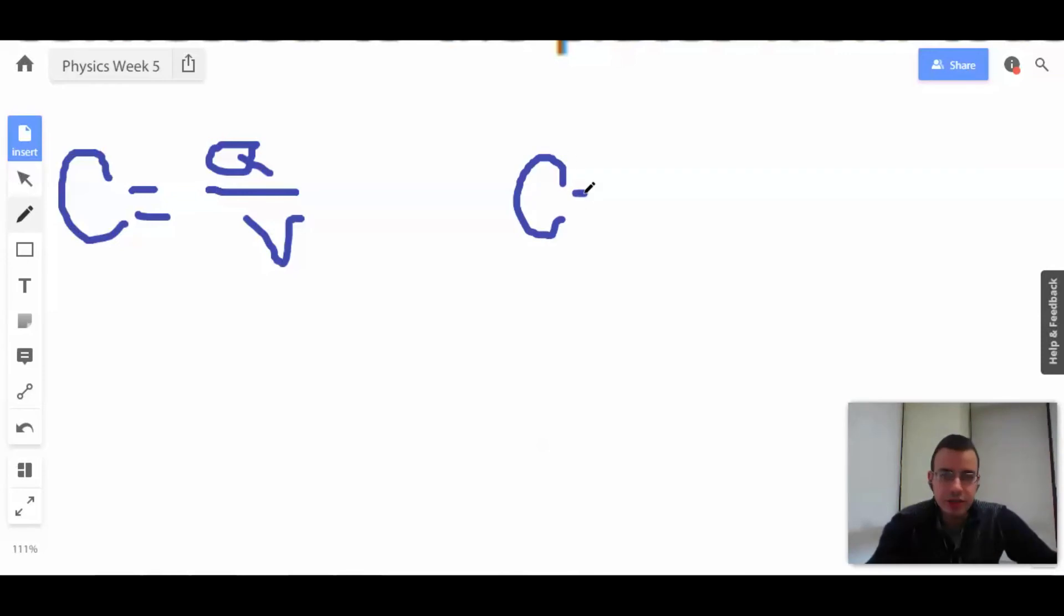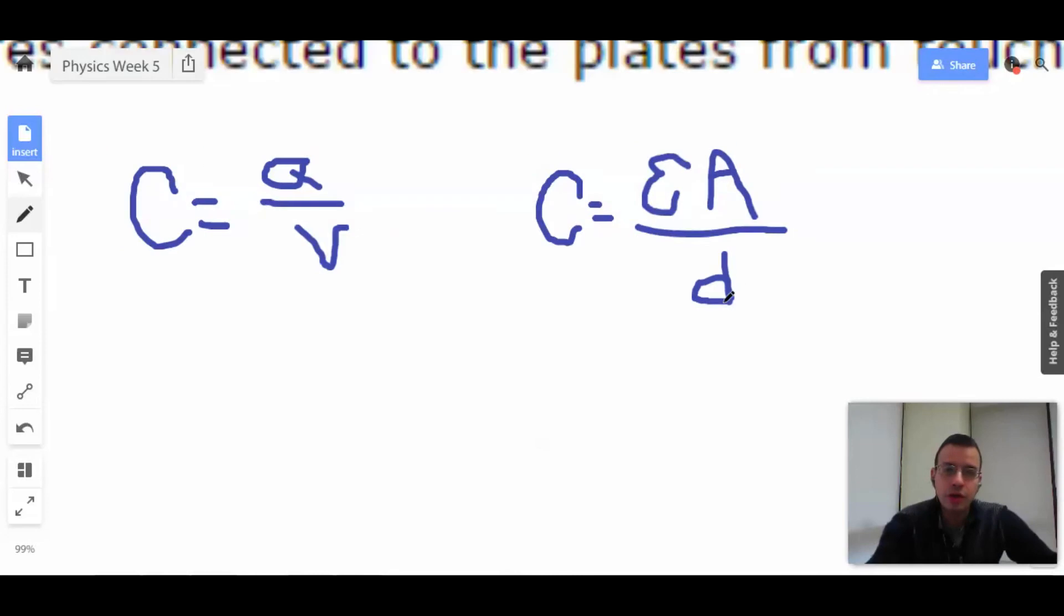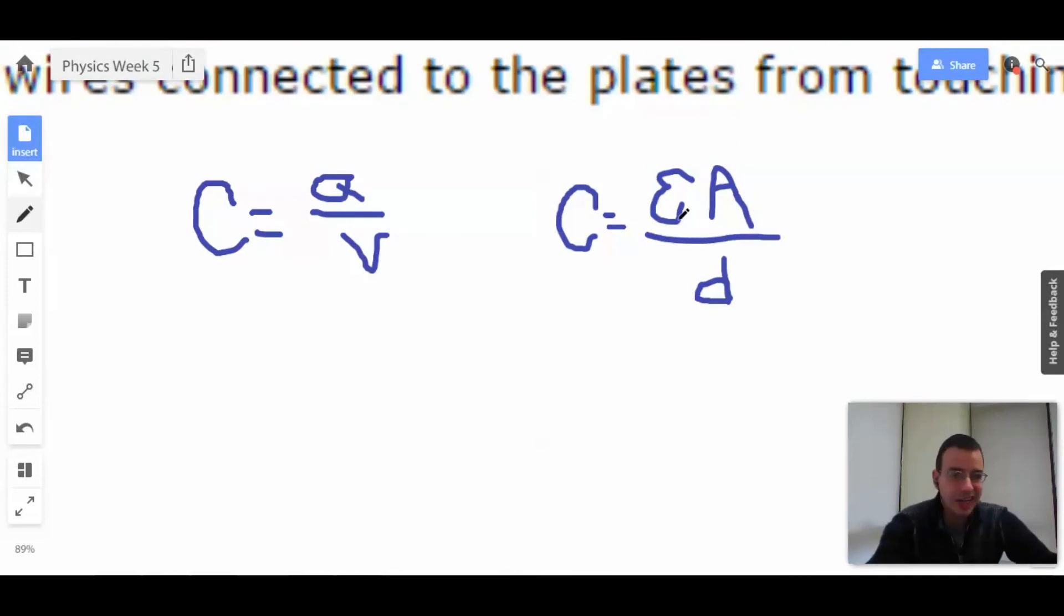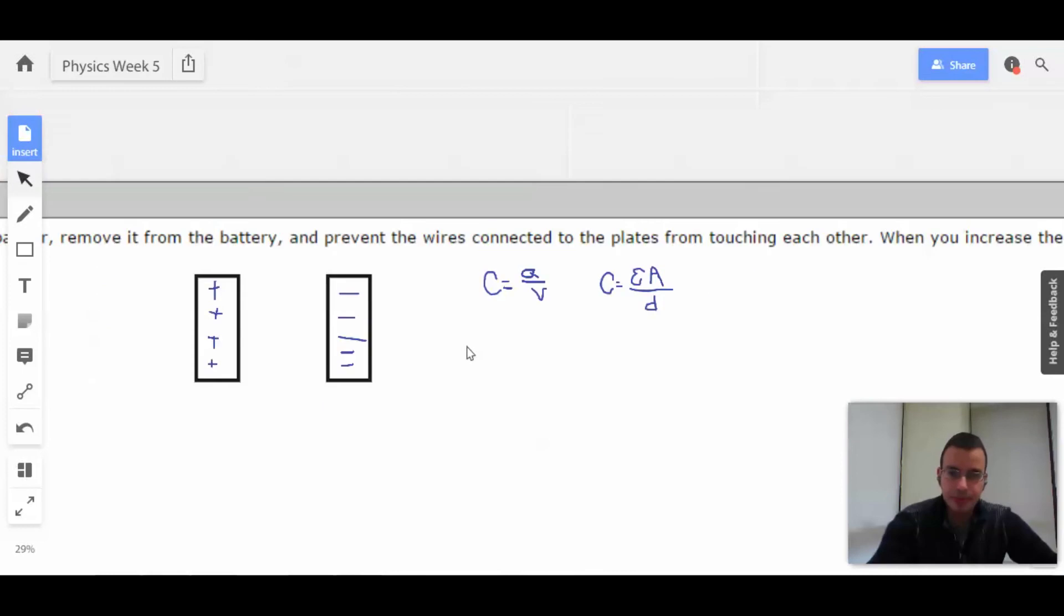is capacitance equals epsilon, kind of like a backwards three, A over D. Where this epsilon right here, it's not epsilon naught, it's really epsilon naught times epsilon r, where epsilon r has to do with the dielectric. But if they say with air, then it's just going to be epsilon naught. If the dielectric is there, then epsilon equals epsilon naught, which is what you'll do most of the time.